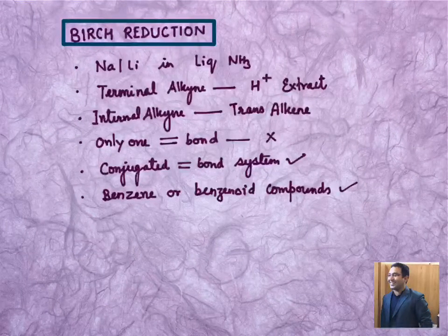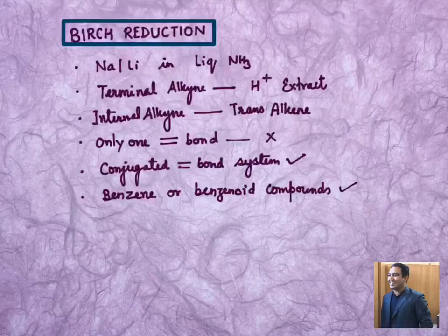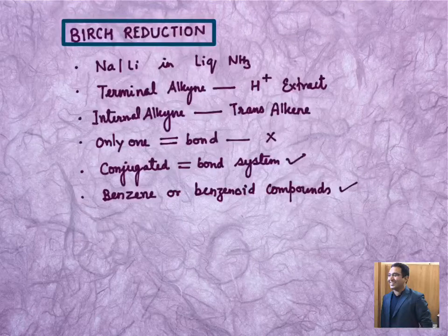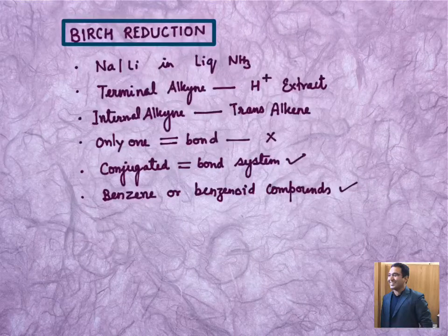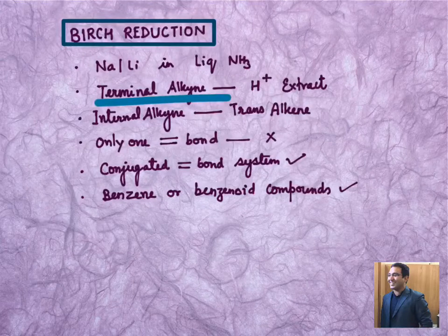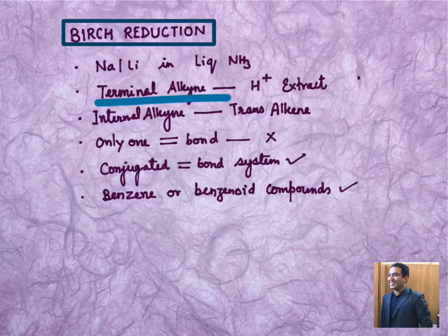If it is a terminal alkyne, then it will not show any reduction, rather it will capture H+ from terminal position because terminal alkyne carries acidic hydrogen. So I can give one example here, let's say we take CH3-C≡C-H,